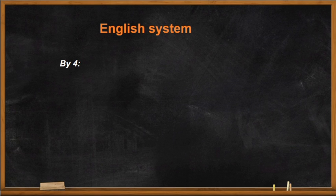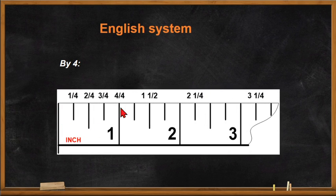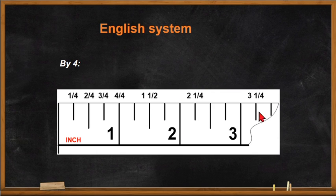When divided by four, the distance between zero and one is divided into four parts. The lines read as one-fourth, two-fourths, three-fourths, and four-fourths. The same applies between two and three inches. One and one-fourth, one and two-fourths — which simplifies to one and one-half — then two and one-fourth. Two-fourths can be simplified to its lowest term, which is one-half.